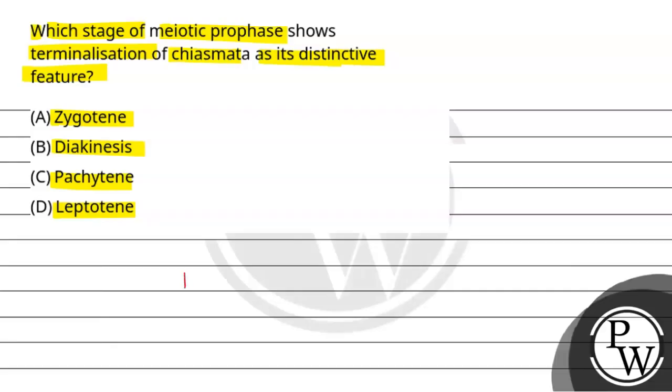So the key concept for this question is phases of meiosis one, which specifically we have to see prophase one. Prophase one mainly has five stages.